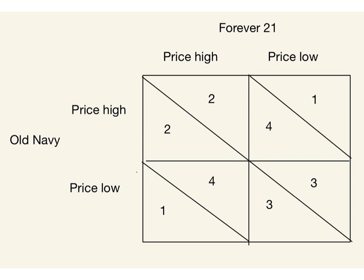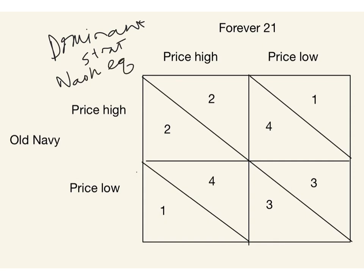Let's think about this game. I want to emphasize some skills for solving these games and give out some definitions as we go. We're going to talk about dominant strategies and Nash equilibrium. Let's think about Old Navy's problem — what should Old Navy do? Old Navy is in a game with Forever 21, so Old Navy is going to anticipate what Forever 21 is going to do and then try to do the best it can.